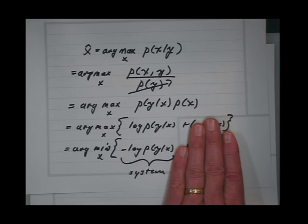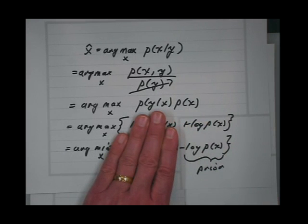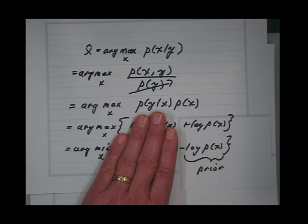If I just minimized the system model, that would be the maximum likelihood estimate. But that's not necessarily going to be good because it could overfit the data. So I also put in the prior model. If I only used the prior model and ignored the data, that would be like how administrators make decisions — without any facts, just making whatever decision was the same as the last one. That's over-regularized.